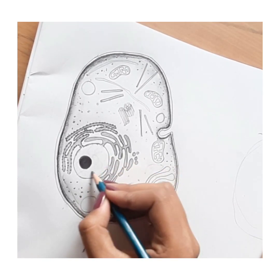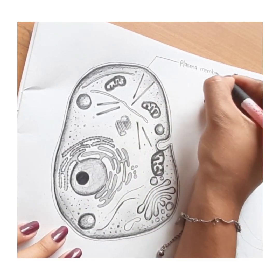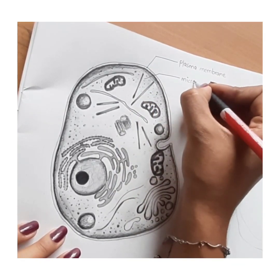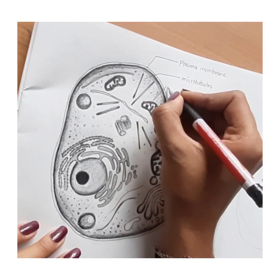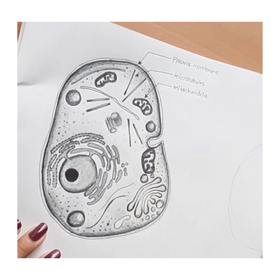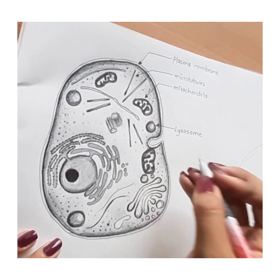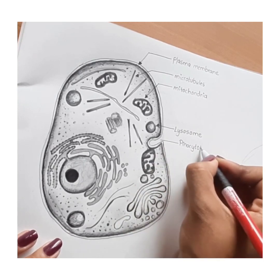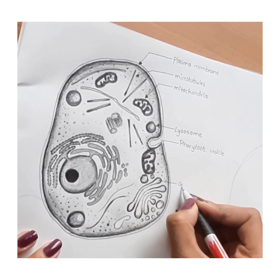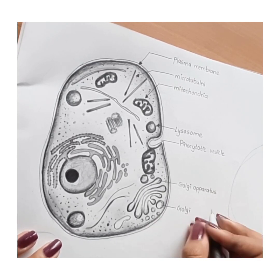Now labeling: plasma membrane, these are microtubules, mitochondria, lysosomes, vesicle — that is pinocytotic vesicle — Golgi apparatus, and these are Golgi vesicles.